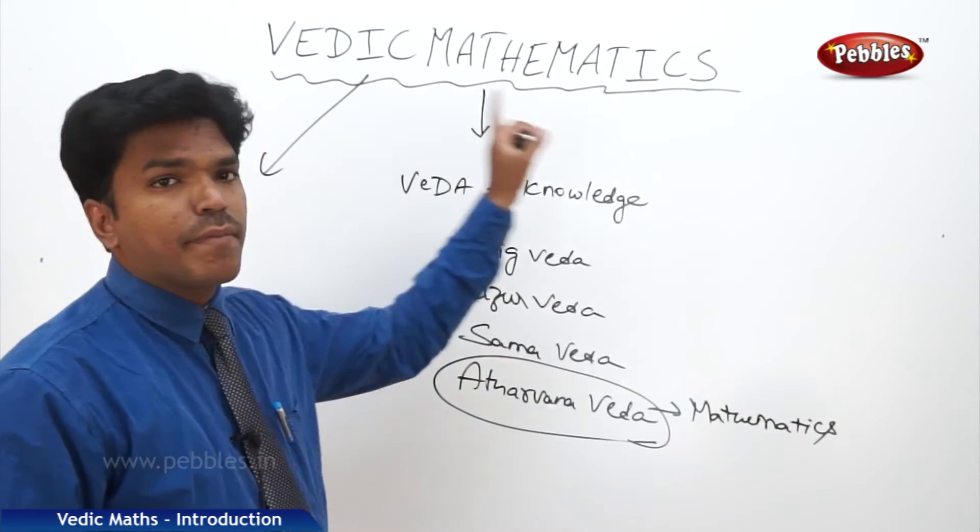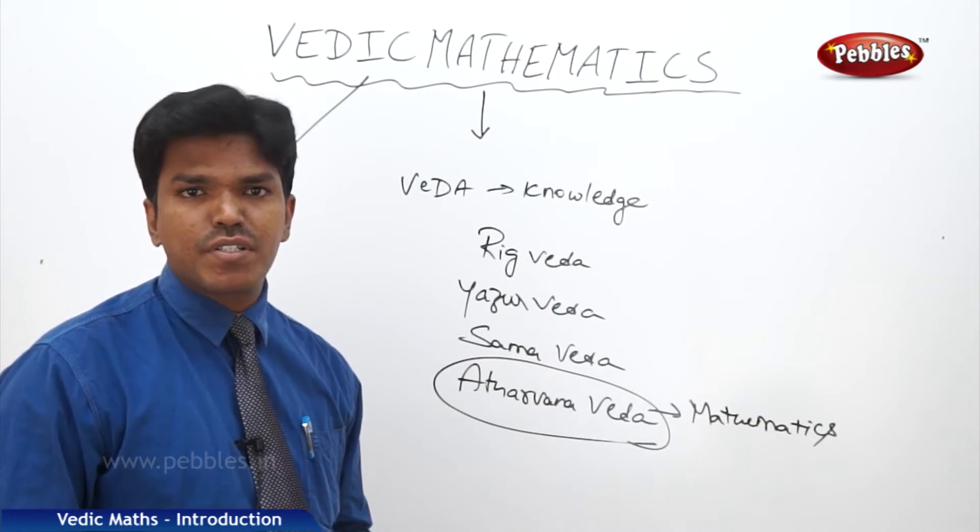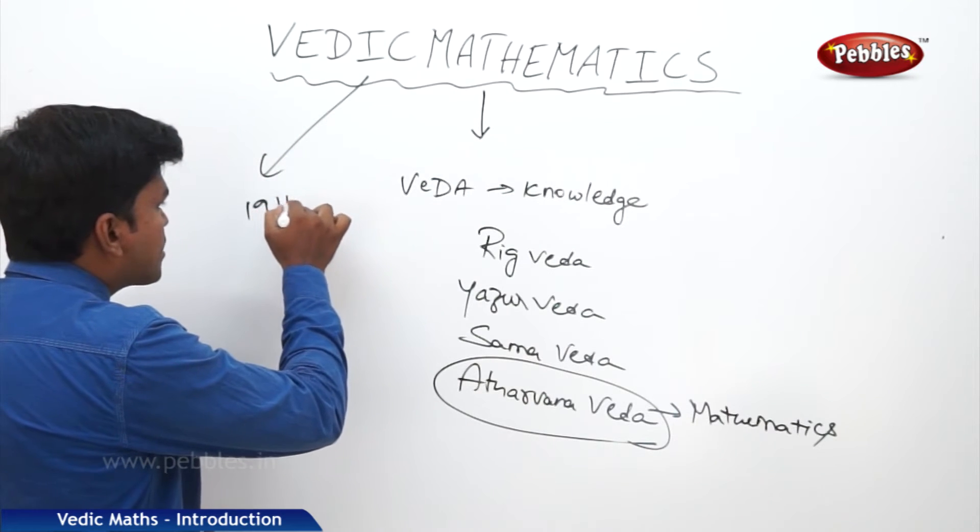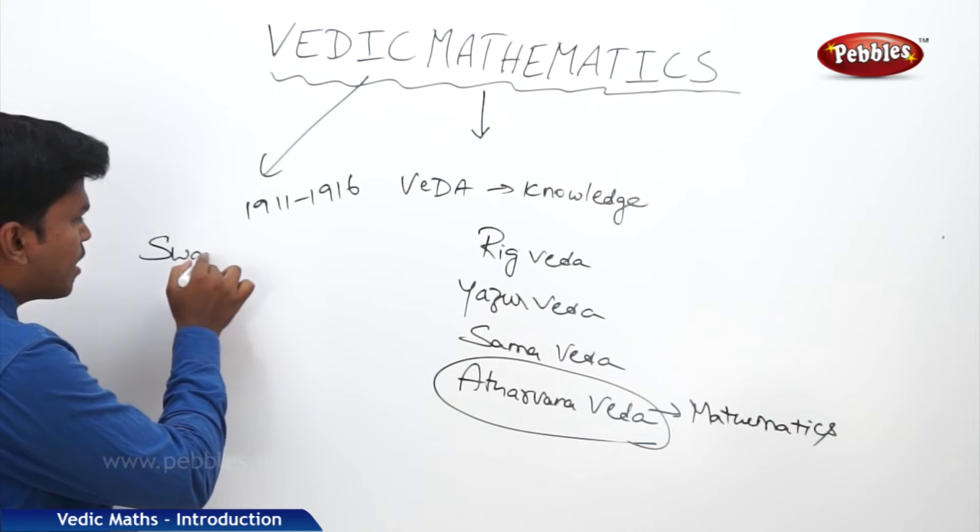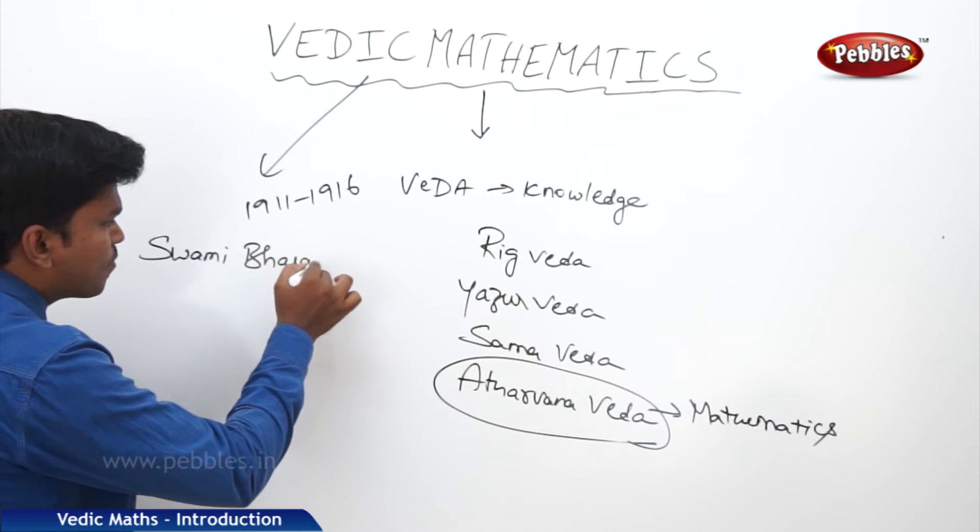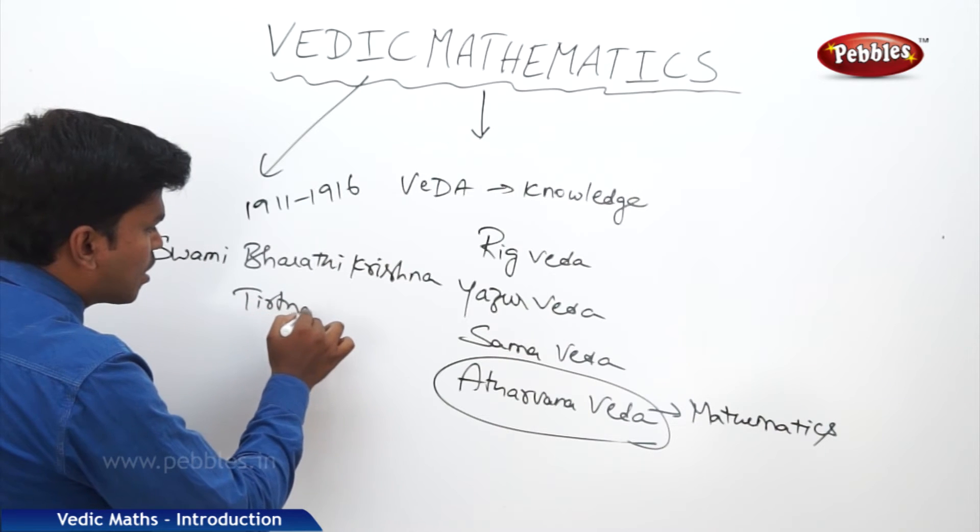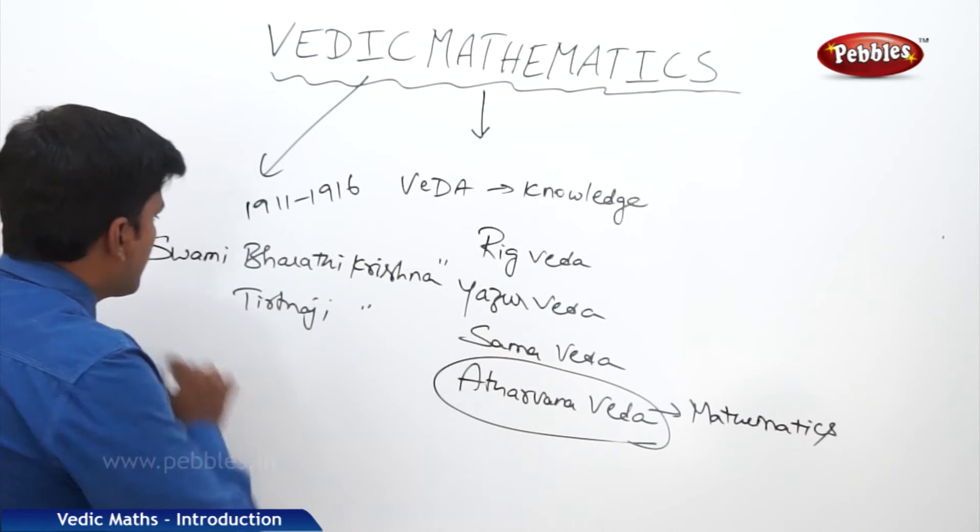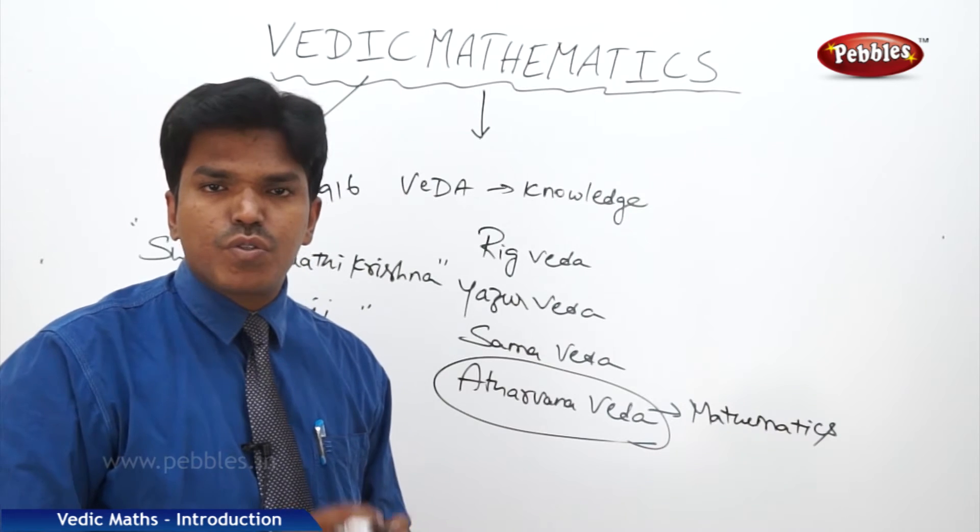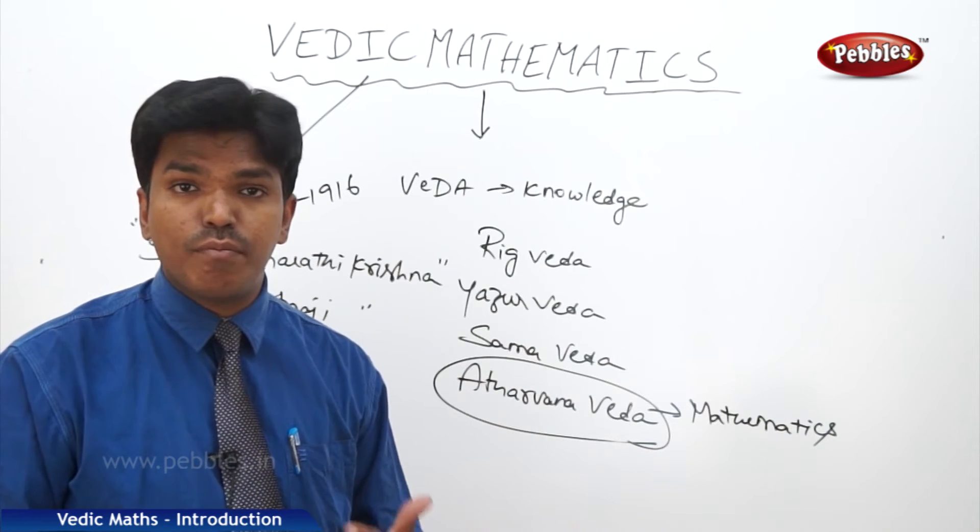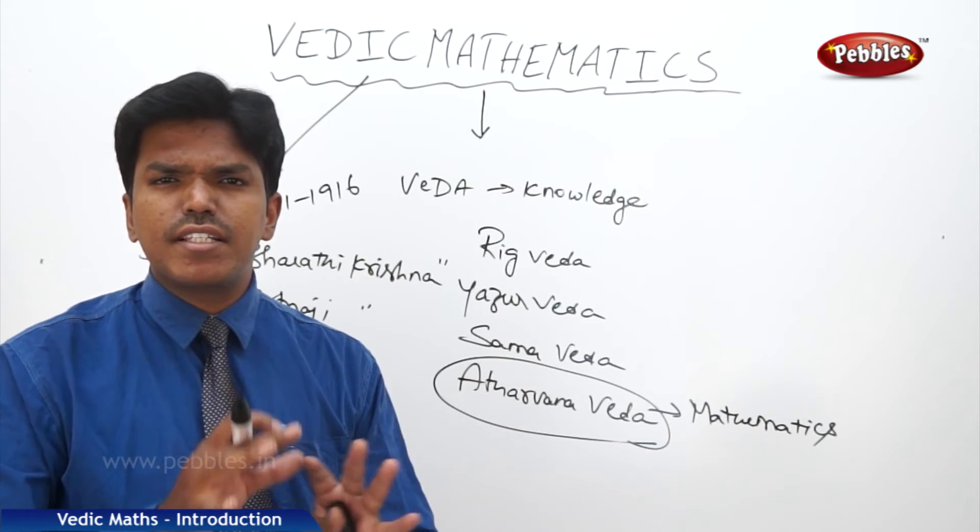The term Vedic Mathematics came into existence in the starting of 20th century, and this term is given by a great personality between 1911 to 1916, and his name is Swami Bharati Krishna Tirtha Ji. Swamiji, even though he is a monk, he is very good at physics, mathematics, Sanskrit, and English.